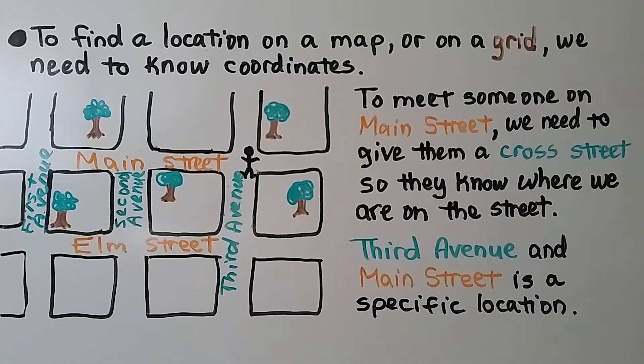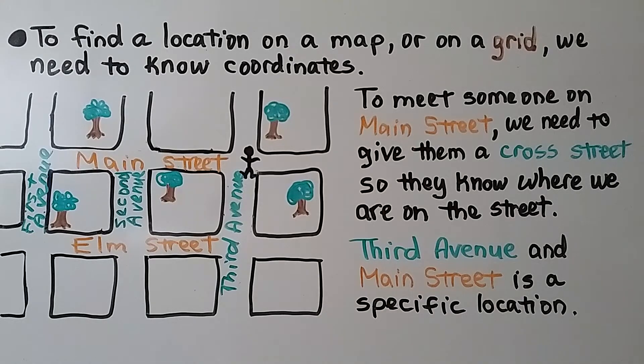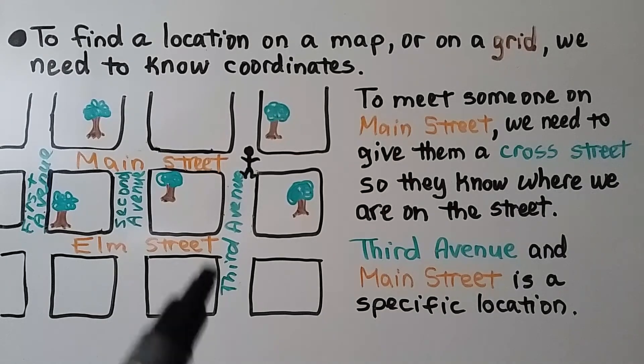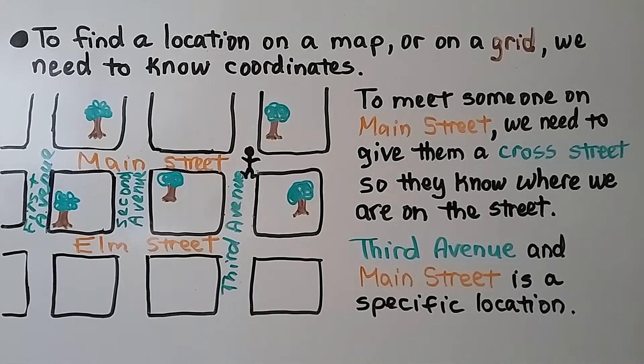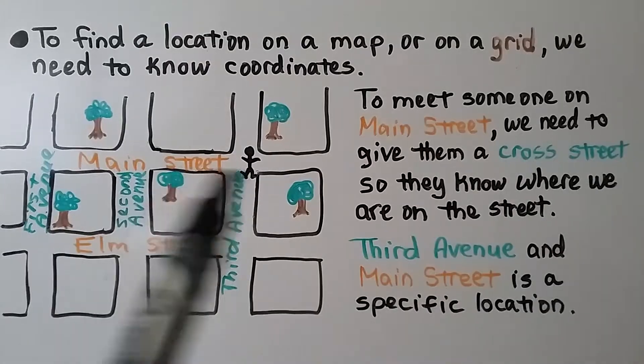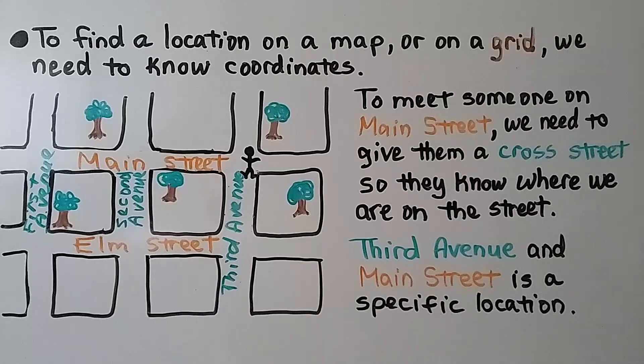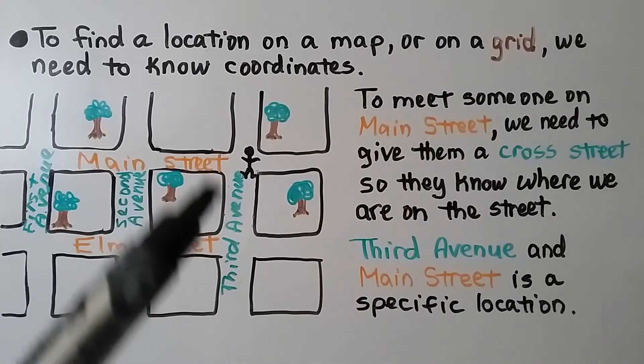To find a location on a map or on a grid, we need to know coordinates. To meet someone on Main Street, we need to give them a cross street so they know where we are on the street. Third Avenue and Main Street is a specific location. I can meet you at Third Avenue and Main Street.